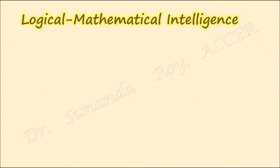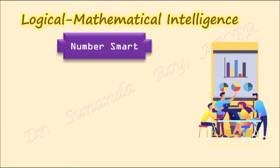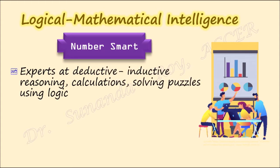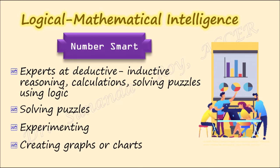The next component is logical mathematical intelligence, or number smart. Professionals like mathematicians, philosophers and physicists exhibit this type of intelligence in abundance. They are very good with numbers and are experts at deductive and inductive reasoning, doing calculations, solving puzzles, using logic and so on. Classroom activities involving solving different types of puzzles, experimenting with numbers and symbols, preparing and creating graphs or charts help develop logical mathematical intelligence among students.